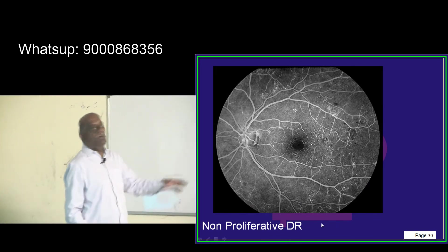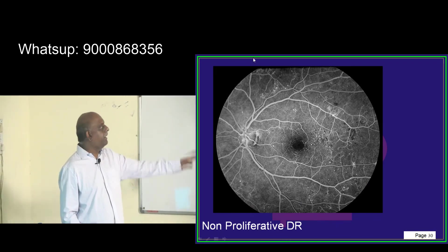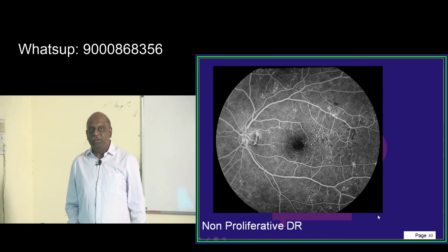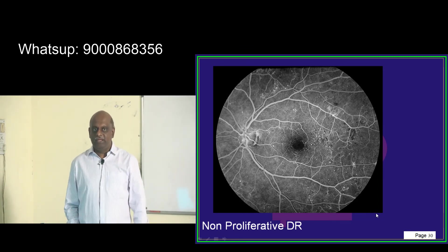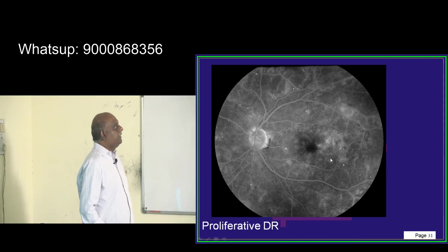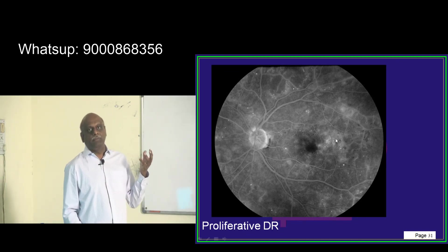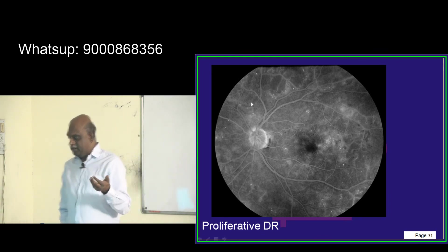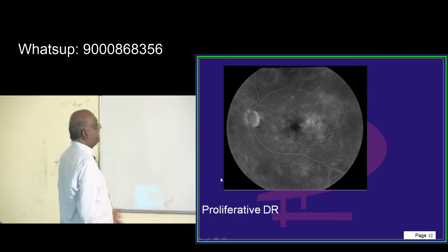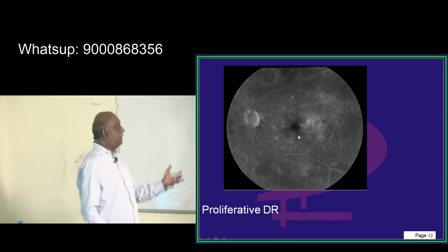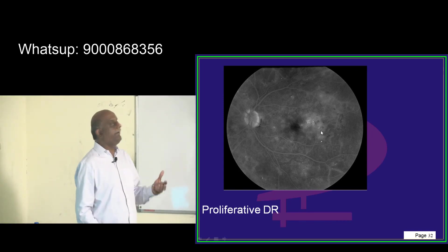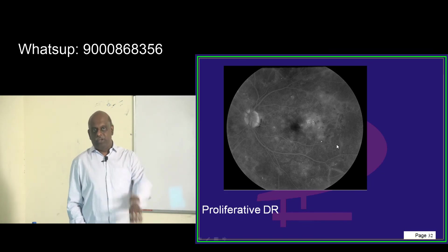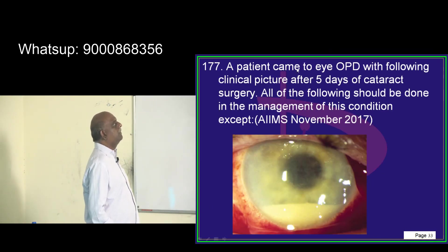In non-proliferative diabetic retinopathy on fluorescent angiography, you can identify microaneurysms, exudates, and similar features. Once it is proliferative diabetic retinopathy, you can see neovascularization around the optic disc. In the late phase of the fluorescent angiogram, this is what you need to remember for proliferative diabetic retinopathy.